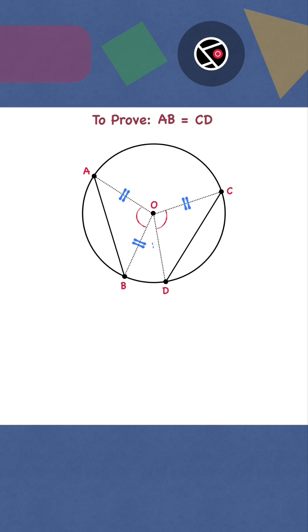OA, OB, OC, OD are equal radii of the same circle. Focus on triangles ABO and CDO.